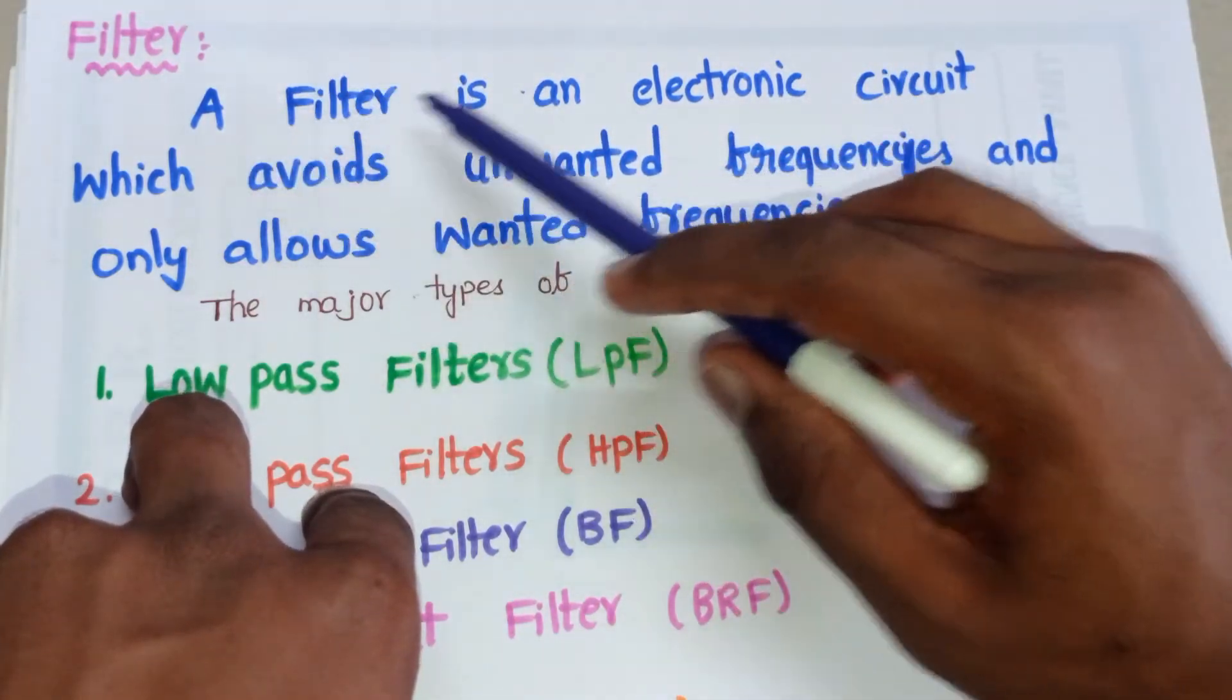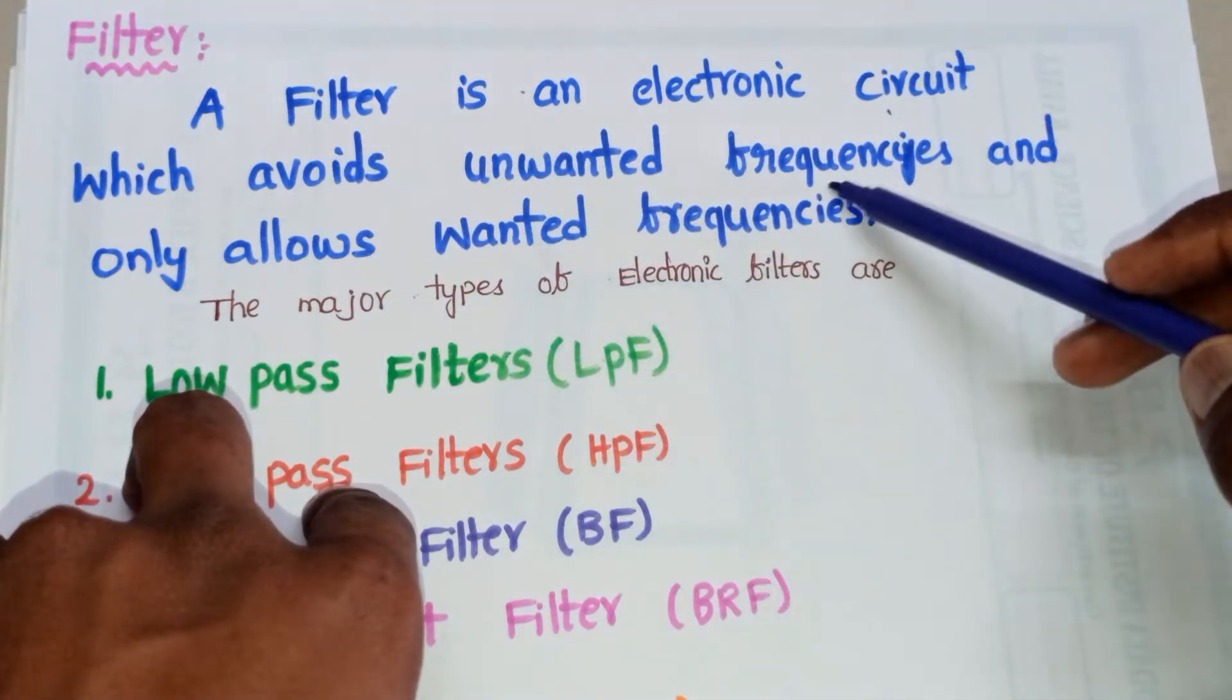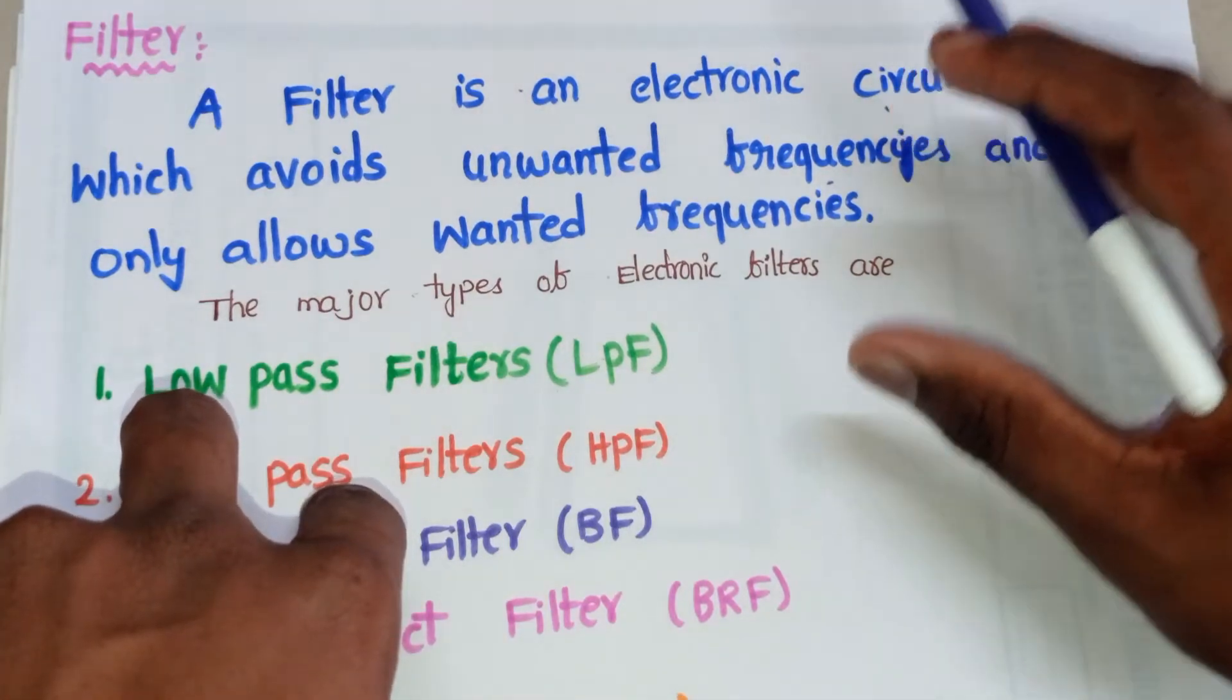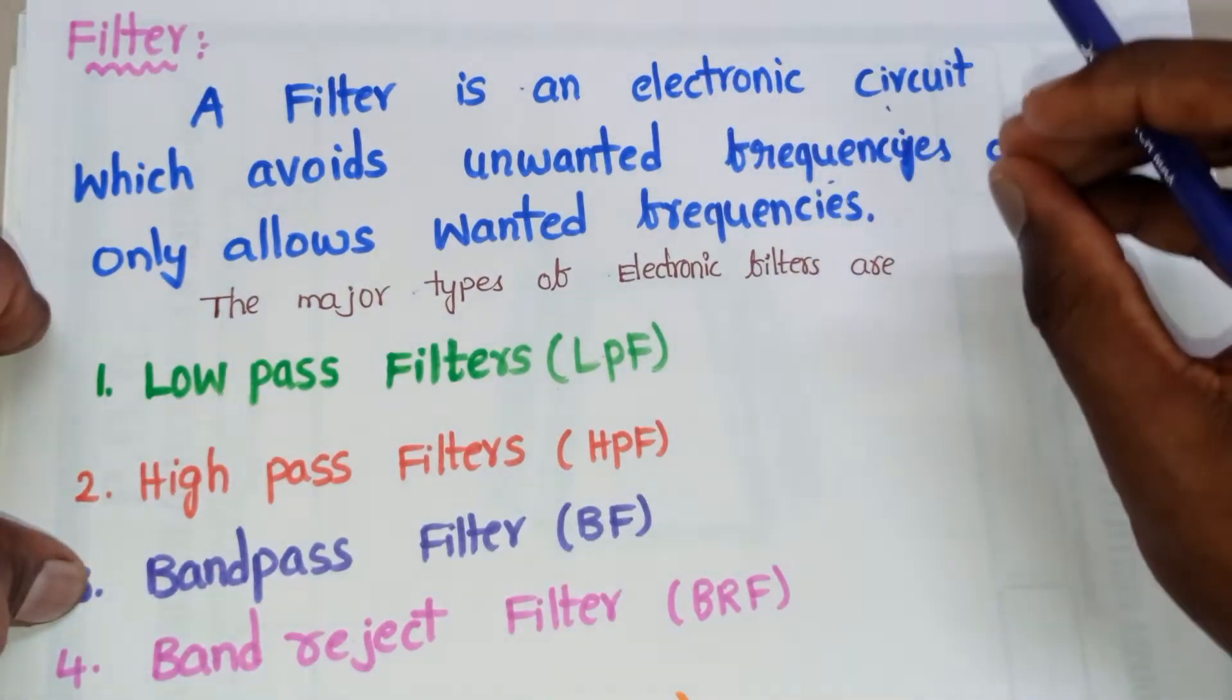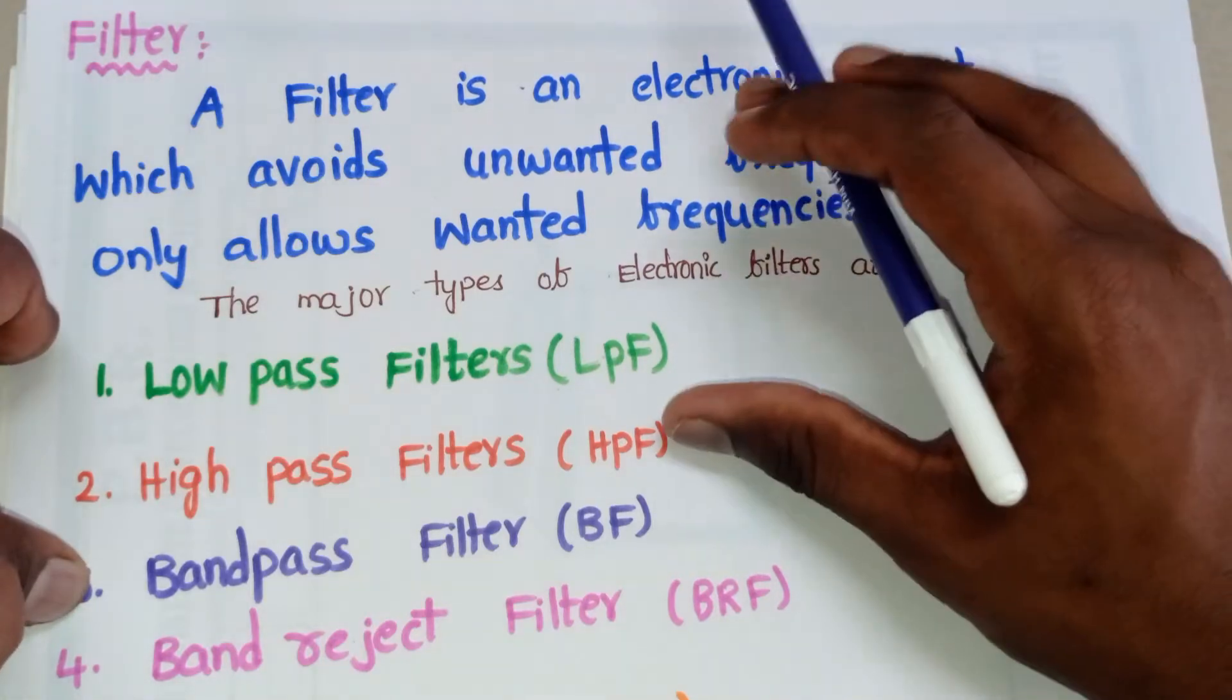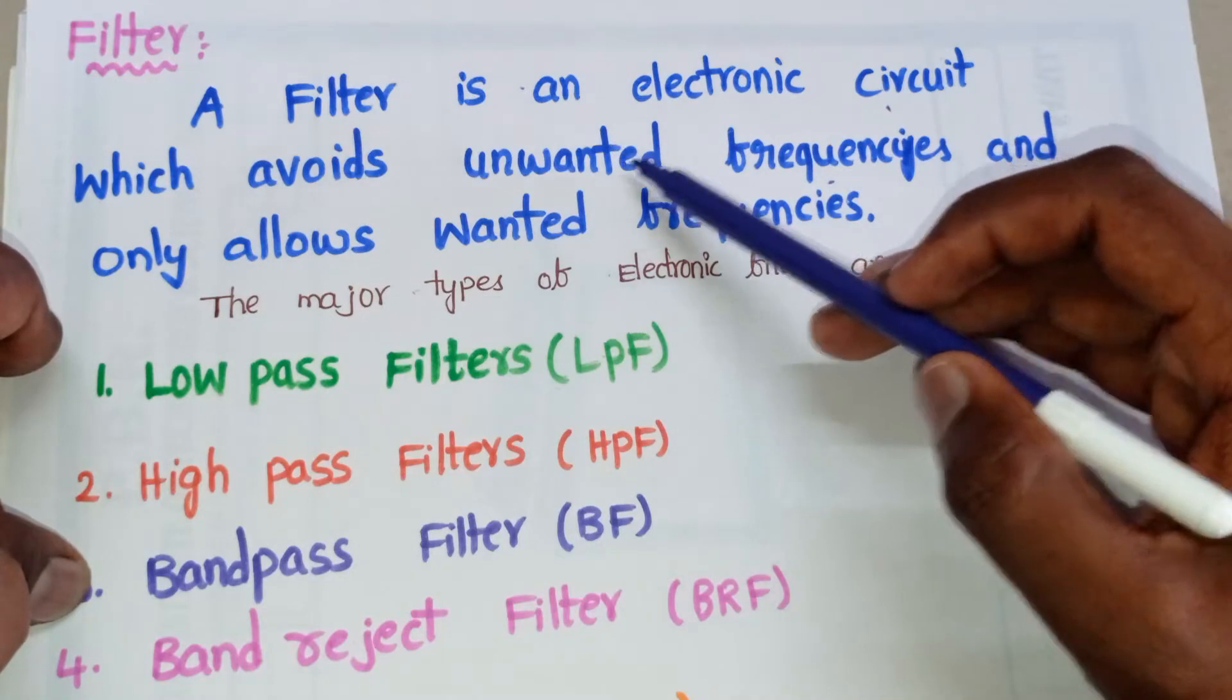A filter is an electronic circuit which avoids unwanted frequencies and allows only wanted frequencies. Suppose if we have a signal that contains both unwanted frequencies and wanted frequencies. Now we want to bring the wanted frequencies only, then we need to place the filter there.